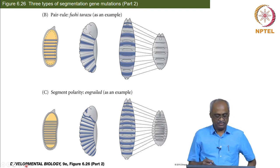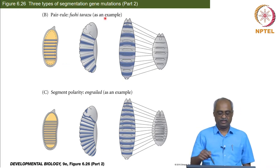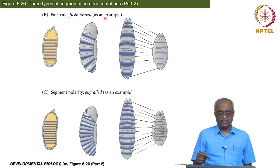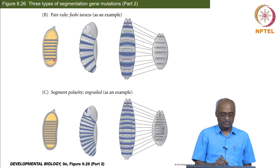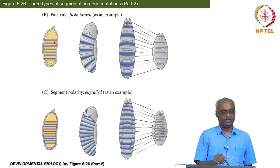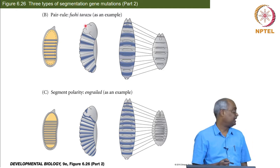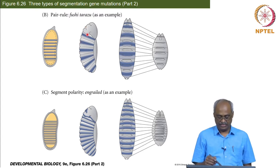These cartoons show the basic pattern of expression and the body parts whose formation a given pair rule gene depends on. In the early embryonic stage, you have this striped pattern of expression — one row of nuclei expresses, the next does not, and so on — and that later corresponds to adjacent sections of two segments. This is called a para segment, which we are going to learn now.